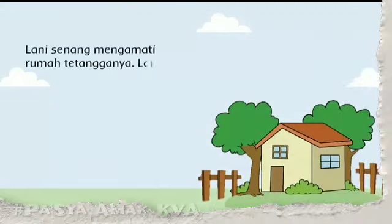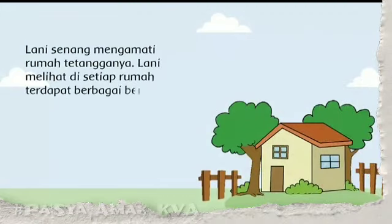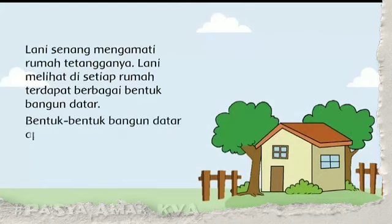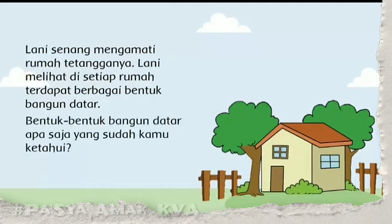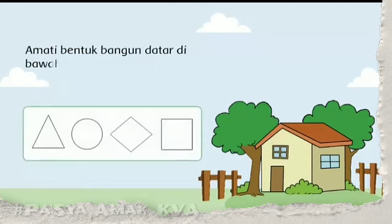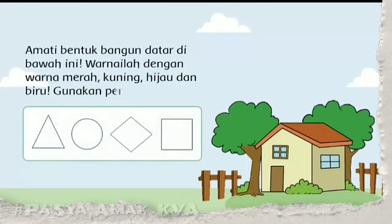Lani senang mengamati rumah tetangganya. Lani melihat di setiap rumah terdapat berbagai bentuk bangun datar. Bentuk-bentuk bangun datar apa saja yang sudah kamu ketahui? Amati bentuk bangun datar di bawah ini, lalu warnailah dengan warna merah, kuning, hijau, dan biru. Kalian bisa gunakan pensil warna atau crayon.